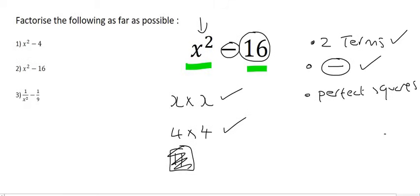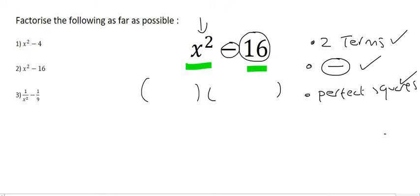So because we have satisfied all three of these conditions, we can do the difference of square technique. And so all that we do is we open up our two brackets, and we say x and x. Then we said what times what gives us 16? We said 4 and 4. And then we put a plus in the one bracket and a minus in the other bracket. Or you can put a minus and a plus, as long as they are different. And that's the end.